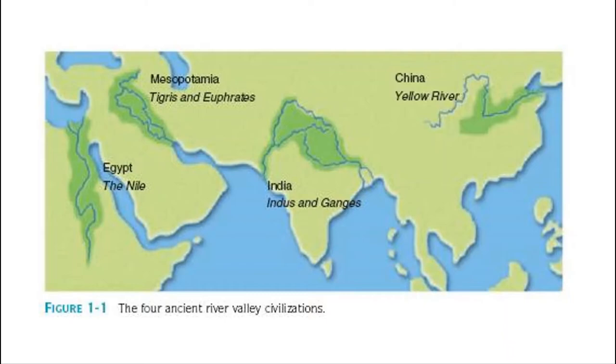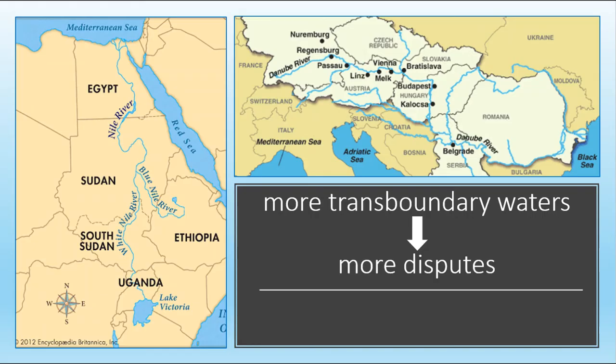When huge empires were reigning over huge territories, it was maybe easier to control the water resources that were abundant. However, today there are many transboundary waters flowing through several states, such as the Nile and Danube rivers. This increased the number of disputes between states as well as the need for effective communication and cooperation.